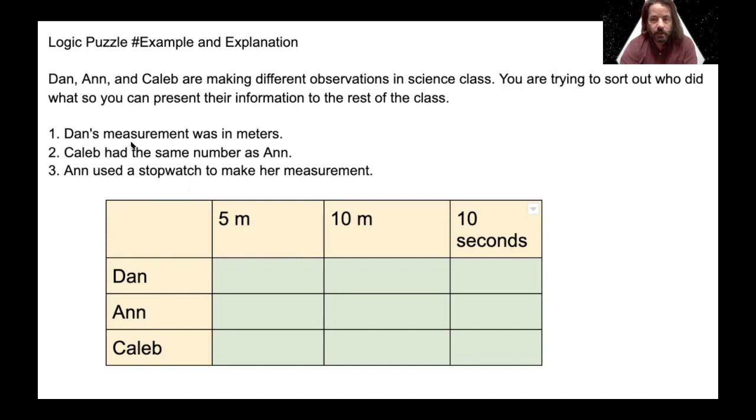So what we're going to do is let's follow the steps. Let's read these statements first. So Dan's measurement was in meters. Caleb had the same numbers as Ann. Ann used a stopwatch to make her measurement.